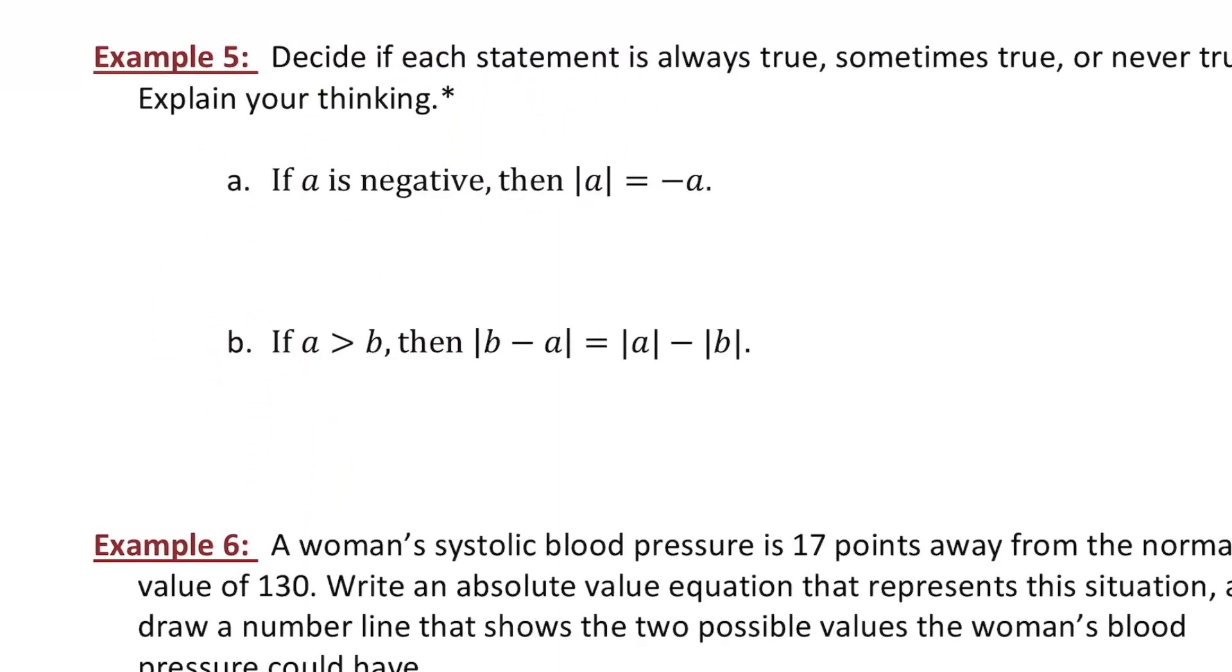Here we're going to decide if some statements are always true, sometimes true, or never true. So thinking about part A, this says if A is negative, then the absolute value of A equals the opposite of A. So let's pick a number. Say we have a value of A is negative 5, meets our requirement of being negative. Let's do the absolute value of negative A and see if it equals the opposite of that value. So if I plug those in, is the absolute value of negative 5 equal to the opposite of negative 5? Yes, it is. Just because it works in one case doesn't necessarily make it true all the time, though. So let's think this through. As long as A is a negative number, then its absolute value will have the opposite sign because distance is always positive. So this is always true.